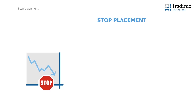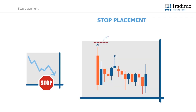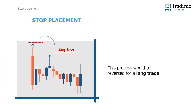As well as being used for market direction, another way traders can use fractals is for stop placement. For example, once you have entered a short trade, you can use the most recent up fractal to place your stop loss. When it comes to placing the stop loss, traders use the tip of the actual fractal indicator rather than the candle high. This process would be reversed for a long trade, where you would look to use the tip of the down fractal to place your stop.